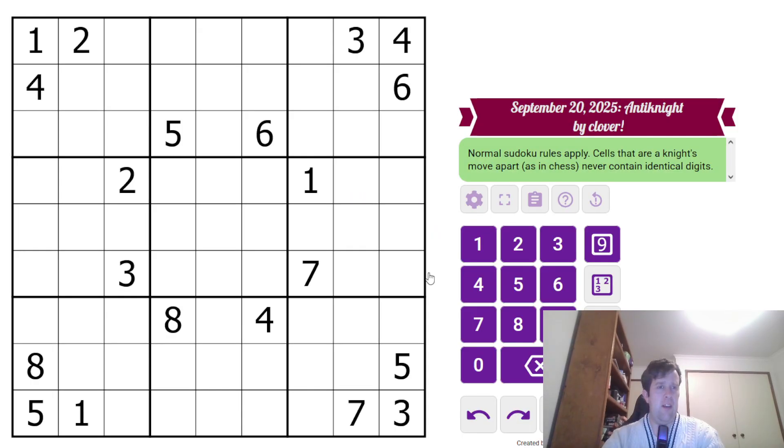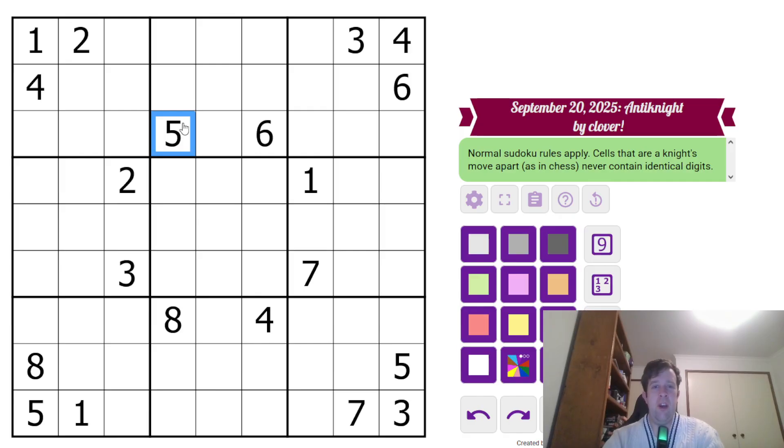This is an Anti-Knight Sudoku. So normal sudoku rules apply. Each box, each row, column must contain the digits one to nine once each. Now, cells that are a knight's move apart, as in chess, never contain identical digits.